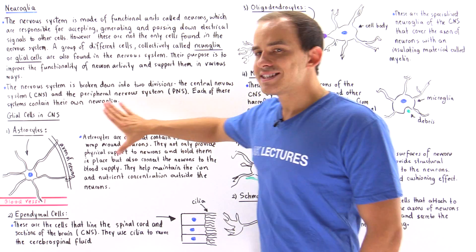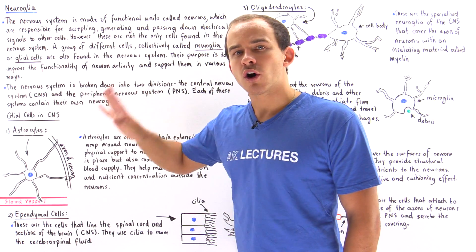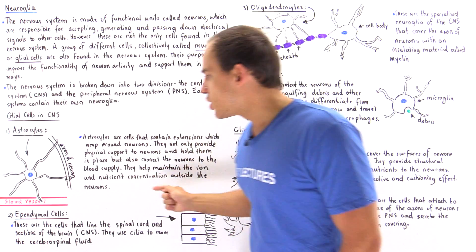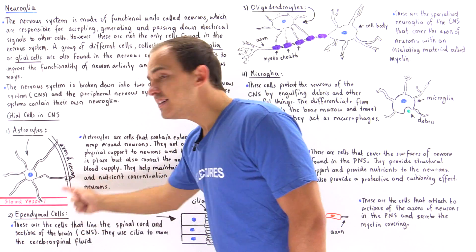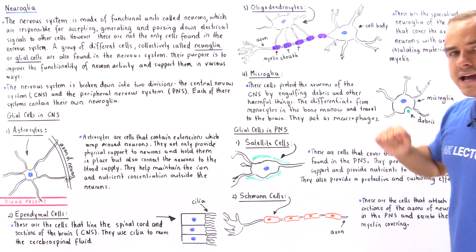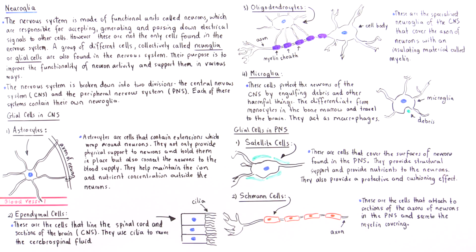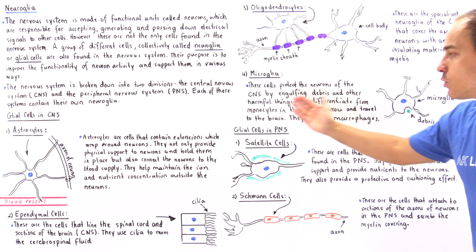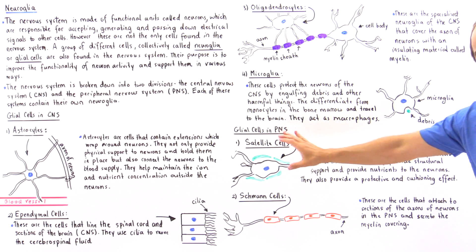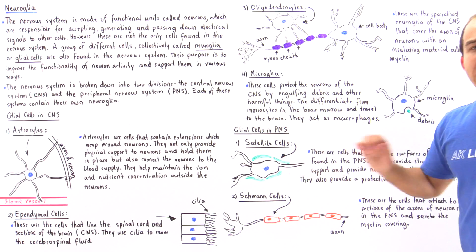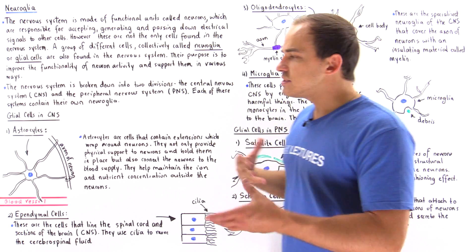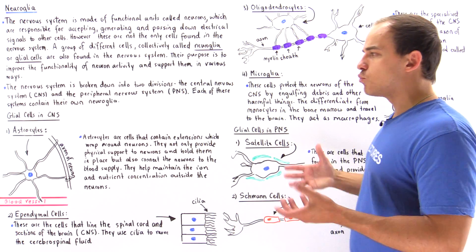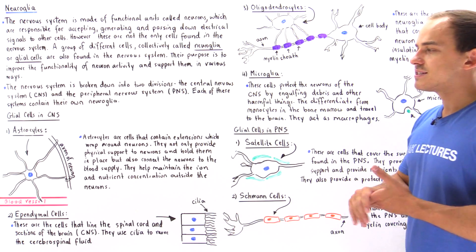Within the central nervous system, we have four major types: astrocytes, ependymal cells, oligodendrocytes, and microglia. Within our peripheral nervous system, we have satellite cells and Schwann cells. Let's discuss the functionality and the structure of each one of these cells.